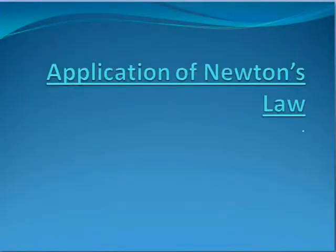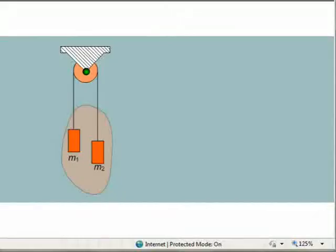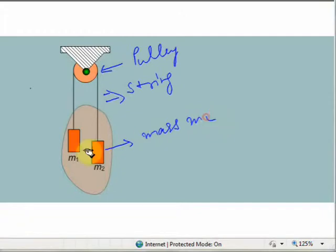Now we will start the chapter on application of Newton's law. First we'll look at a typical pulley system and discuss how to apply Newton's law in it. This is our typical pulley system — you can see a pulley here, around which a string is attached. On both ends of the string there are masses: this is mass m2 and this is mass m1.